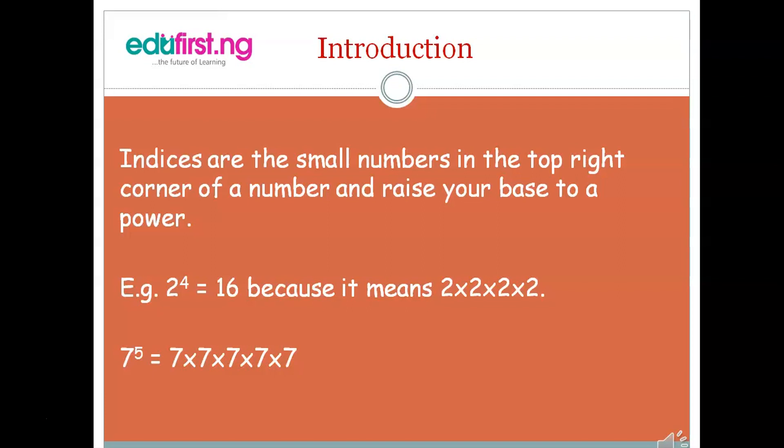Also, 7 raised to the power of 5 means 7 multiplied by 7 multiplied by 7 multiplied by 7 multiplied by 7 — that is 7 appearing in 5 places.